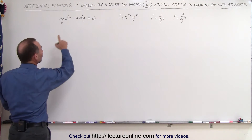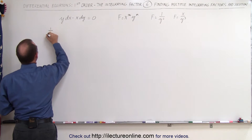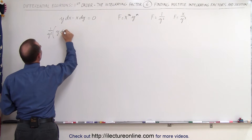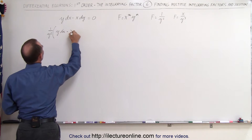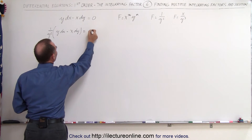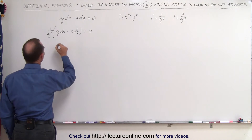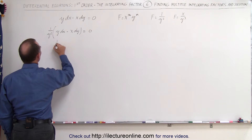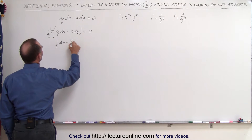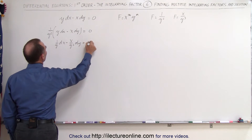We're going to multiply this equation by 1 over y squared. When we do, we get 1 over y squared times (y dx minus x dy) equals 0, because multiplying the right side by the integrating factor still gives 0. This becomes 1 over y times dx minus x over y squared times dy equals 0.